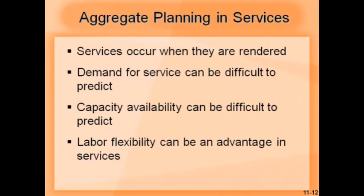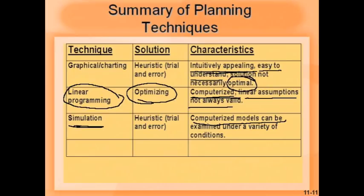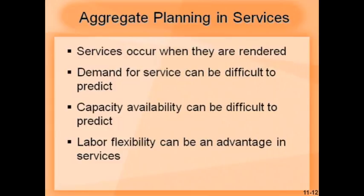For aggregate planning for services, because of the nature of services, it is generally very difficult. Services occur when they are rendered. Demand for services can be difficult to predict — there is a lot of variability. Capacity availability can also be difficult to predict. However, labor flexibility can be an advantage in services. For example, in retail shops, the number of people at a checkout counter can be adjusted very quickly because of flexibility.